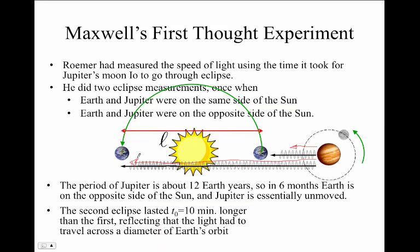It appeared to Roemer that the second eclipse lasted about 10 minutes longer than the first, and that simply reflects that light from Io simply had to go further the distance across Earth's diameter of orbit to reach the Earth. If we call that distance L, then this time lag for the apparent difference in eclipse times is L over c, and that 10 minutes represents then a measurement of the speed of light.